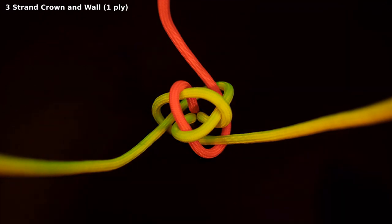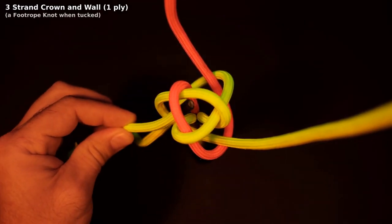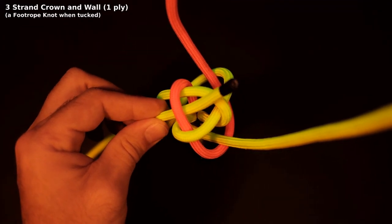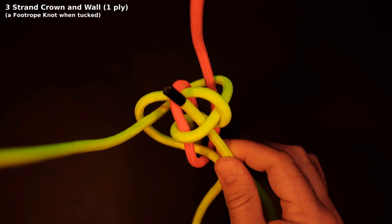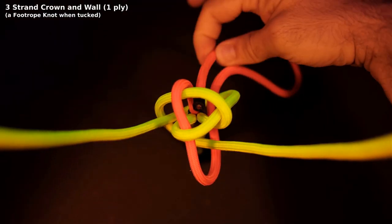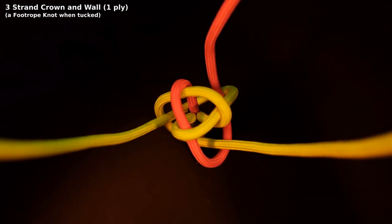At this point we can complete the knot or enlarge it. To complete the knot, tuck all three strands up through the middle. With the strands tucked up we officially have a foot rope knot, which can be made bigger by doubling the strands.